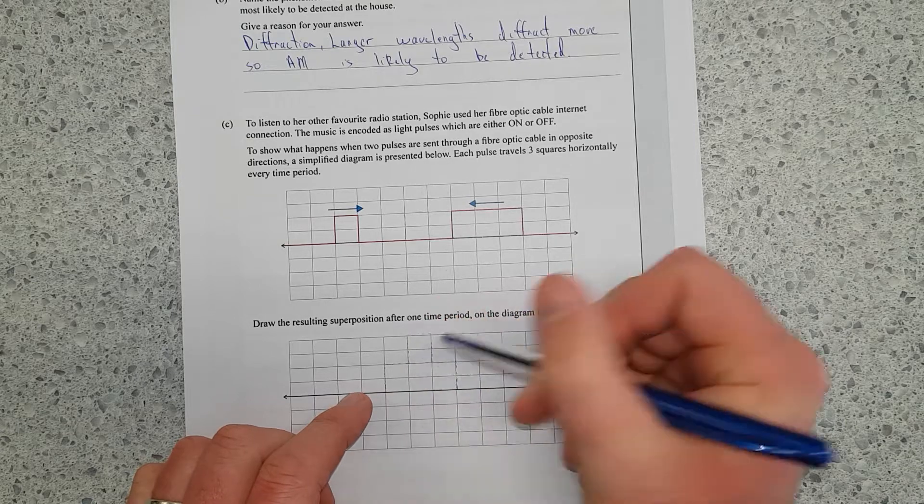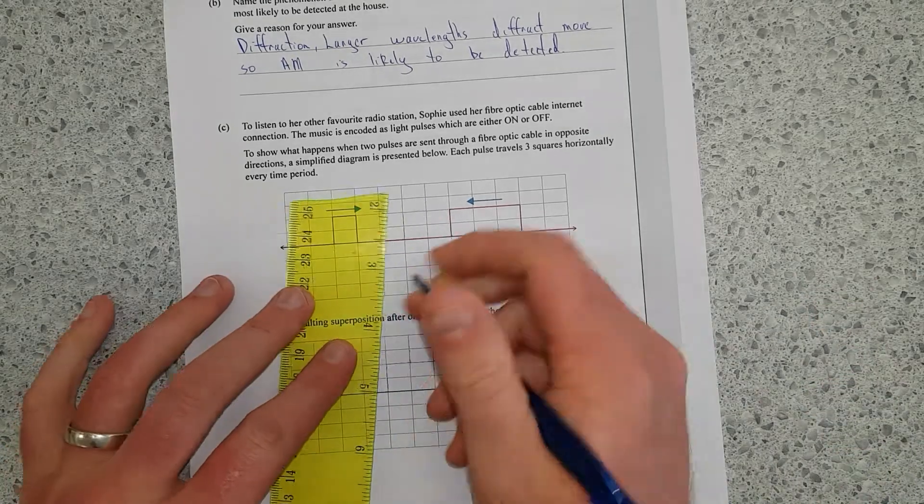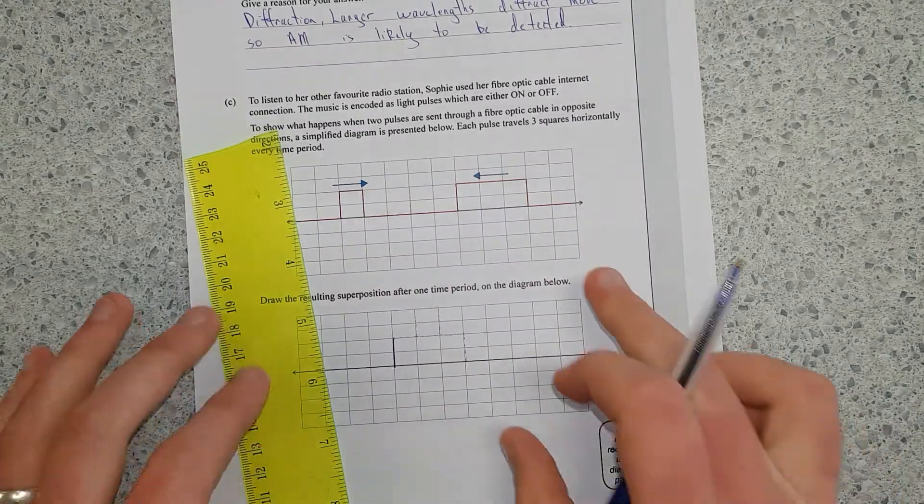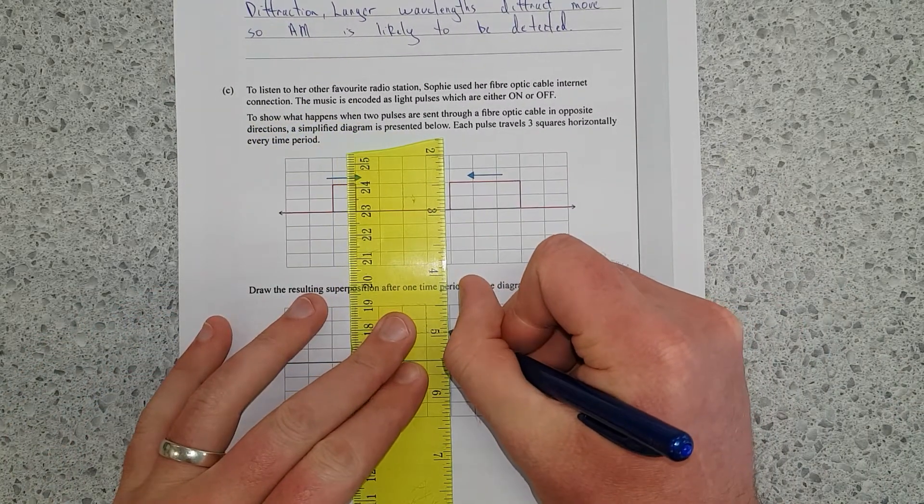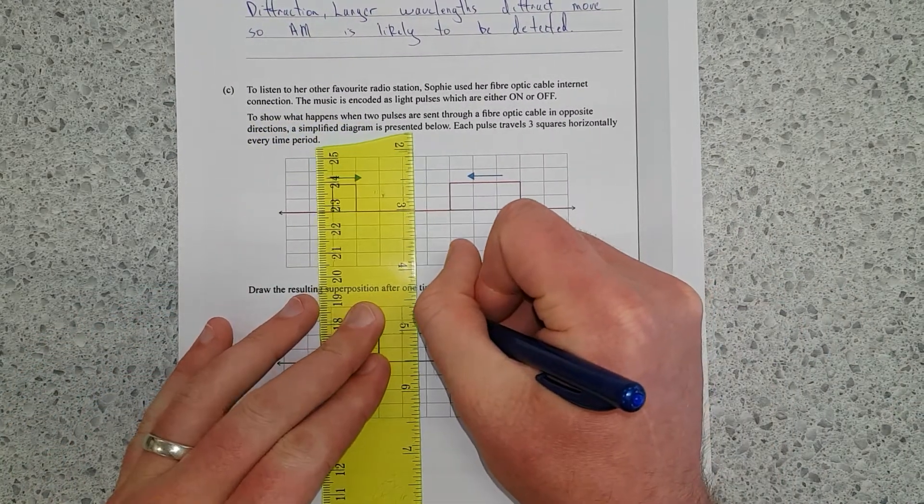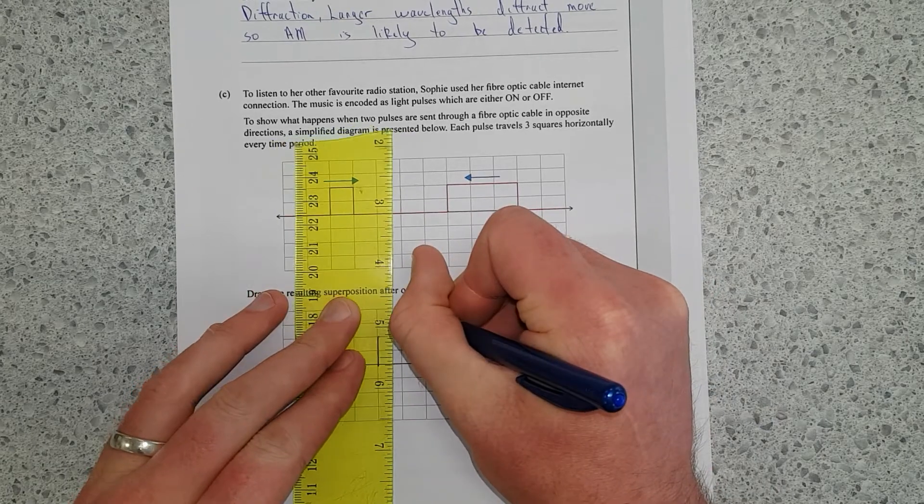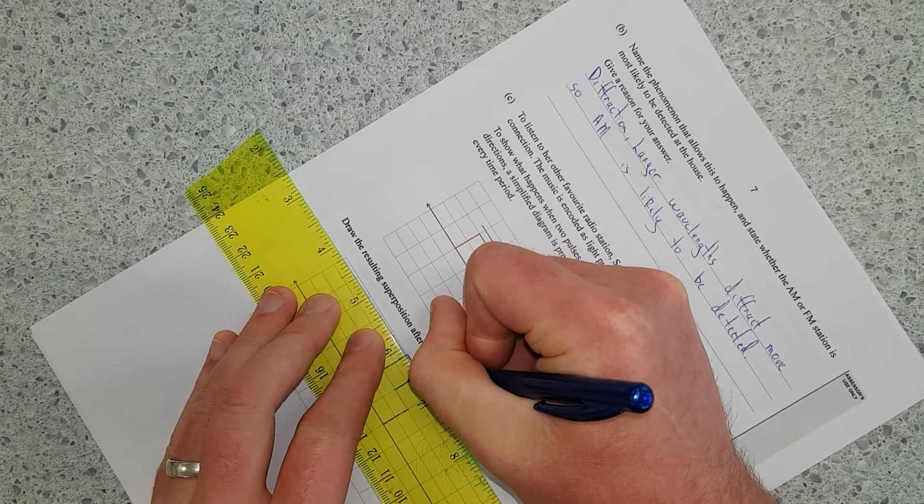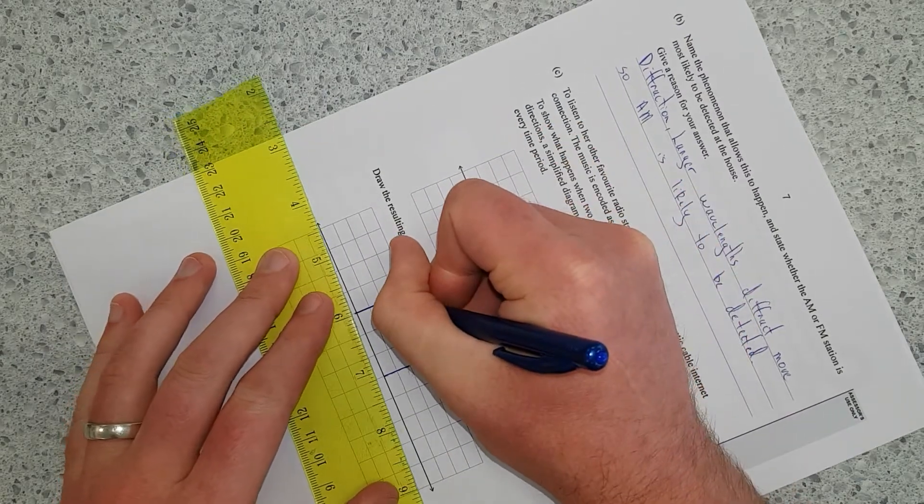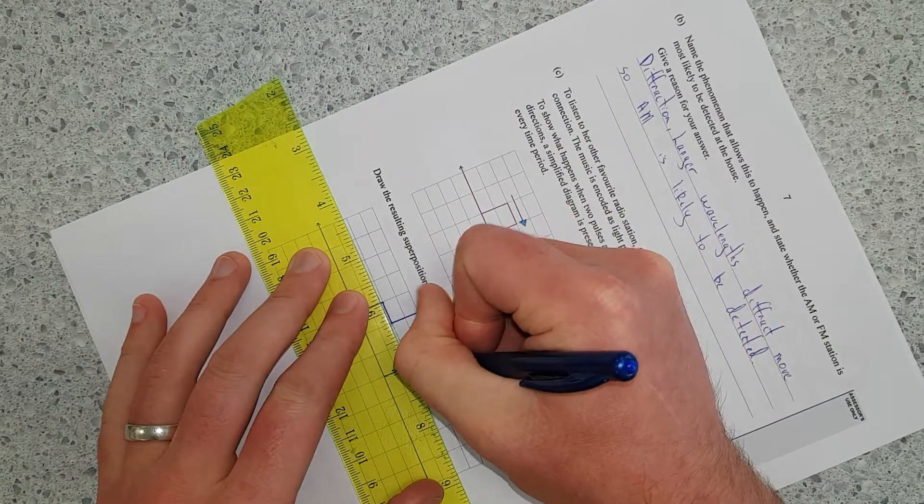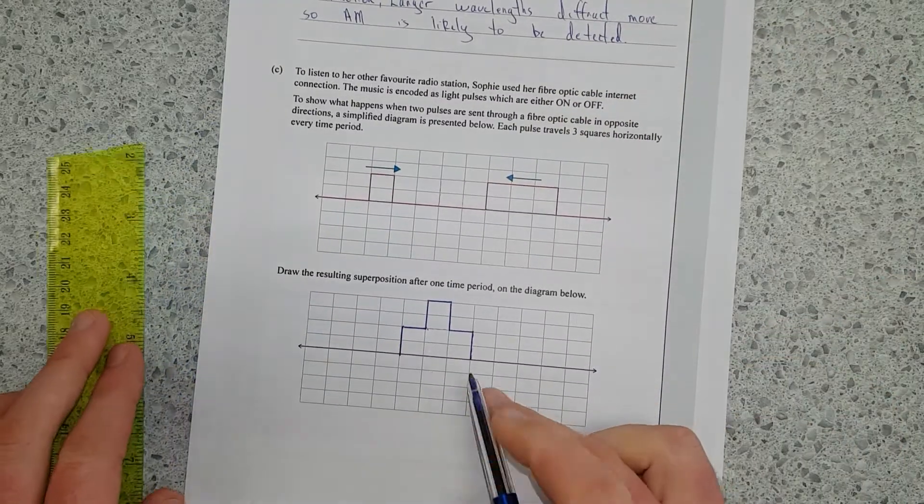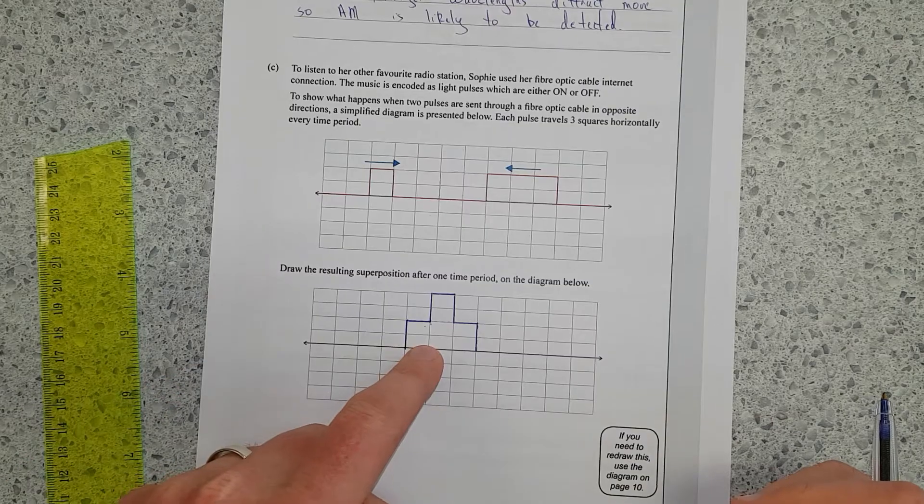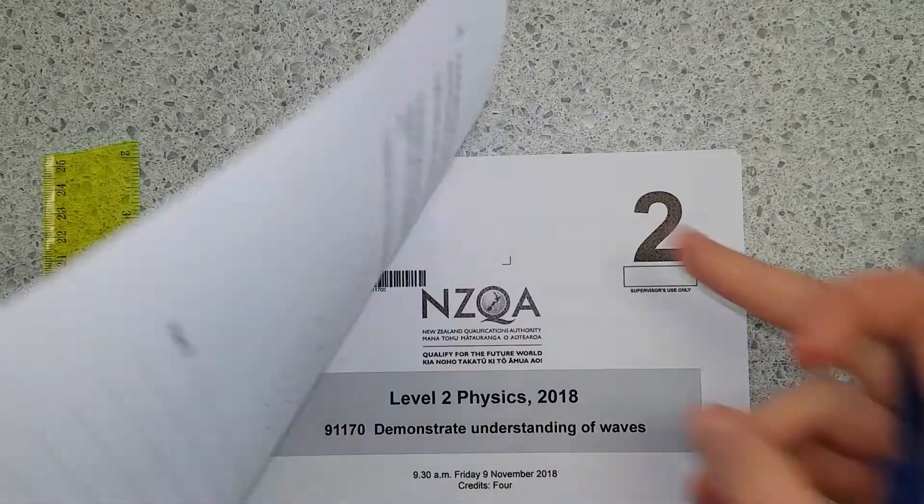And then what we do is we get our ruler and we ink it in. And then I'll just do the vertical lines first because it's easier. And we're going to draw that across like that. So that is the superposition, adding the waves together after one time period. Use a ruler because it needs to be neat. Don't be messy.